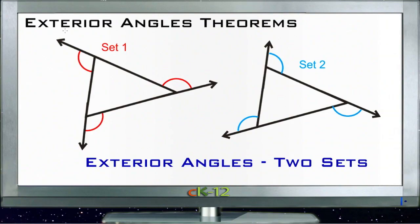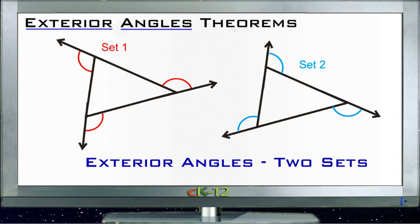Let's talk about exterior angles and the exterior angle theorems. These theorems deal with the different ways that exterior angles affect different polygons, in this case particularly with triangles.